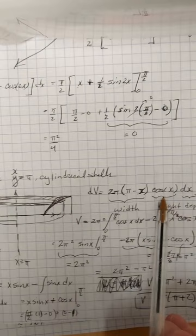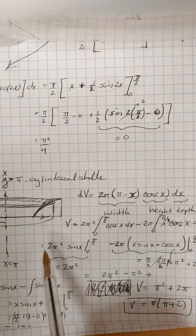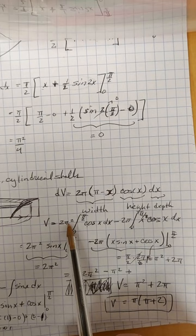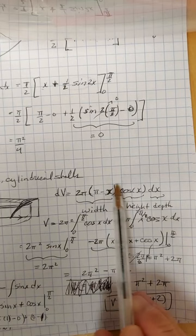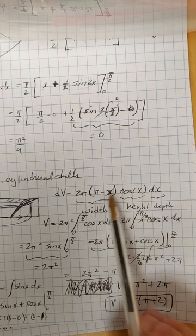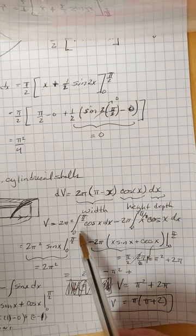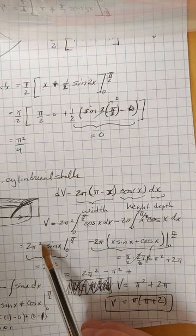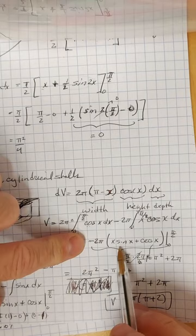The method of shells integrates this over the bounded region from 0 to pi over 2. Distributing, we get 2π times the integral of cosine x, giving the first integral, minus 2π times the integral of x cosine x. I broke it up this way because each integral is easier to handle individually. The first one is straightforward: the integral of cosine is sine, giving 2π² times sine x evaluated from 0 to pi over 2. Sine(pi/2) is 1 and sine(0) is 0, so this part equals 2π².